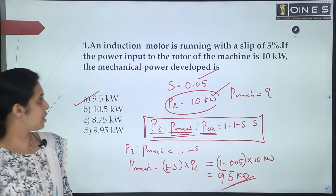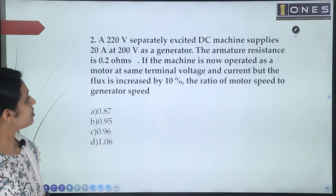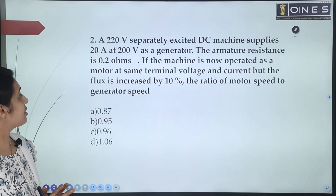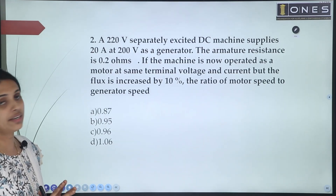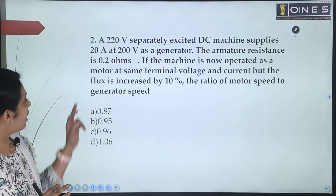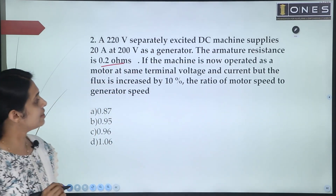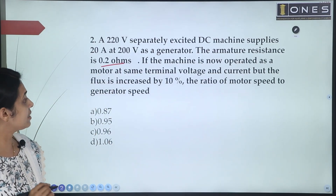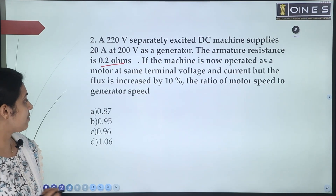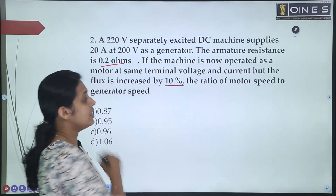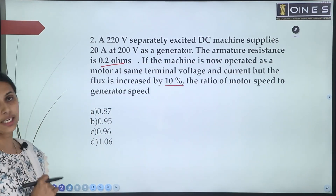Next question: A 220V separately excited DC machine supplies 20A at 200V as a generator. The armature resistance is 0.2 ohms. If the machine is now operated as a motor at the same terminal voltage and current but the flux is increased by 10%, find the ratio of motor speed to generator speed.